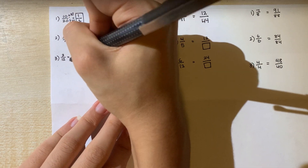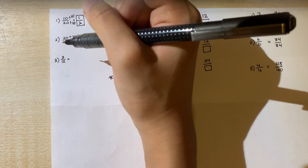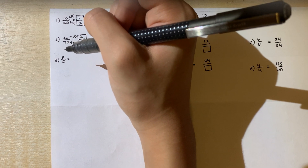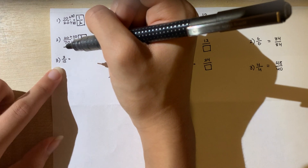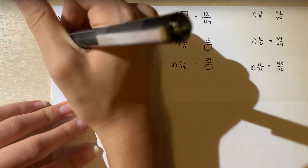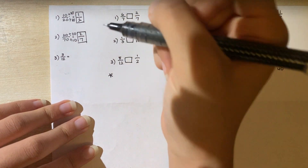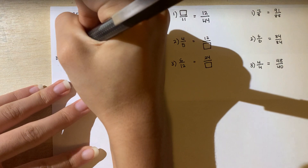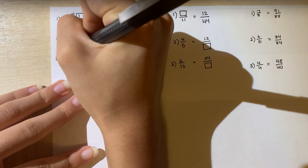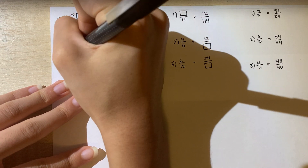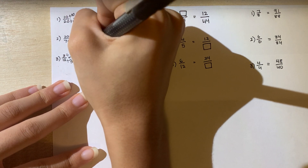To simplify 3 over 12, both numbers are not divisible by 10, so we have to find another common factor. The greatest number that both are divisible by is 3, because 3 is divisible by itself and 12 can be divided by 3. So 3 divided by 3 equals 1, and 12 divided by 3 equals 4. The answer is 1 fourth.